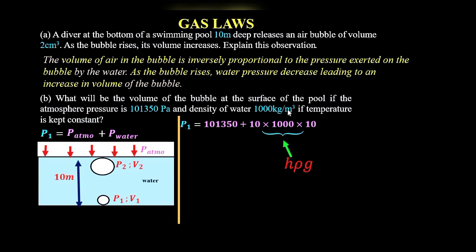And g is the gravitational field strength, which we assume to be 10 m/kg for this case. We had already been given the atmospheric pressure, so we have 101,350 Pa. When we add this, we should get pressure at the bottom, which is 201,350 Pa.